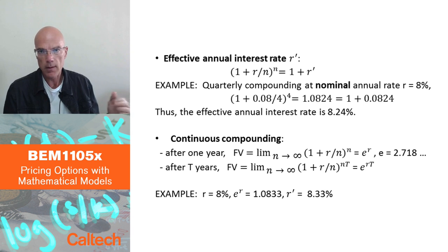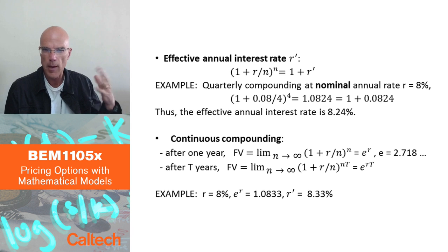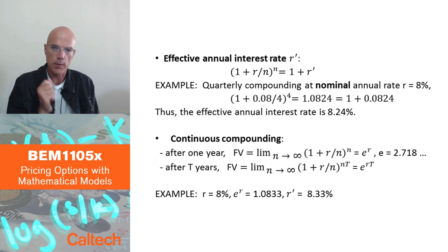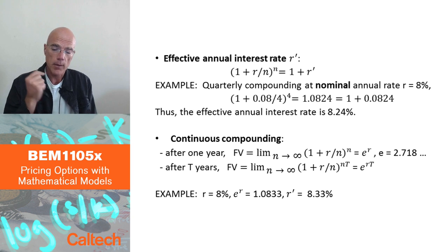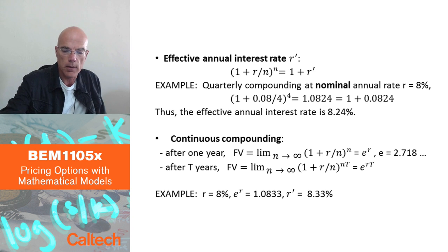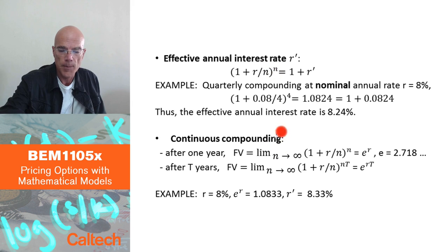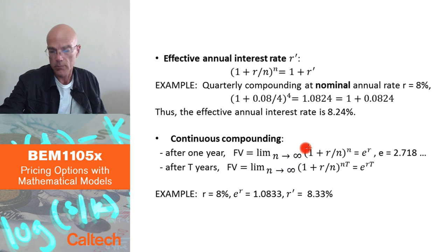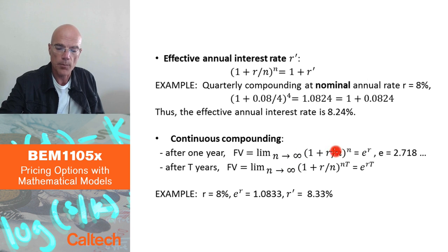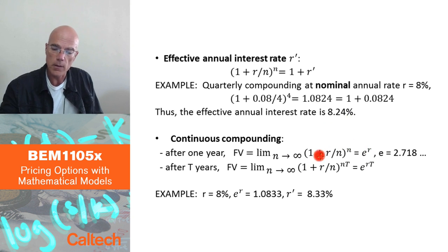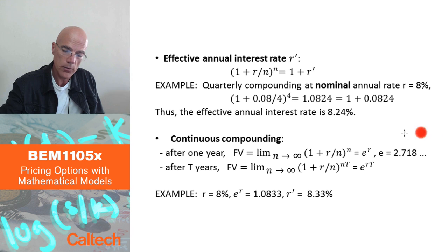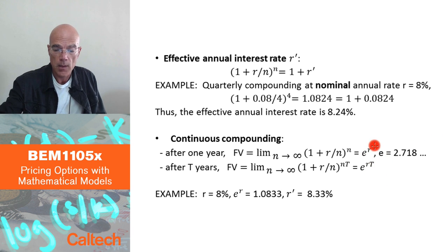In this course, especially in continuous time models, it's mathematically more elegant to use continuous compounding — imagining the bank compounds interest continuously, every instant. Mathematically, this means taking the limit as n goes to infinity in the future value formula. That limit is the exponential function: the limit of (1 + r/n)^n as n → ∞ is e^r.